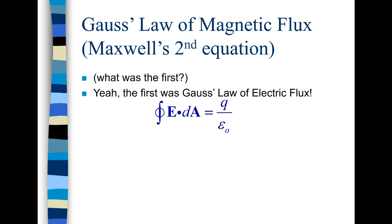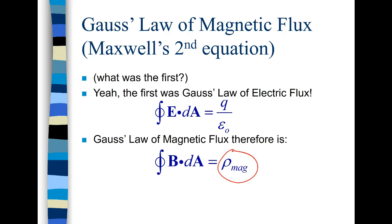There's a very similar expression for magnetic flux and it looks something like this. The surface integral of B dot dA is equal to rho magnetic. Now what is this rho magnetic? Well rho magnetic is something that we're going to call the magnetic monopole density. Okay so what's a monopole?